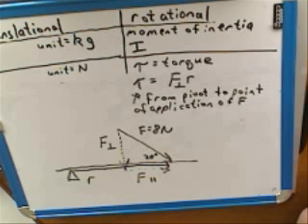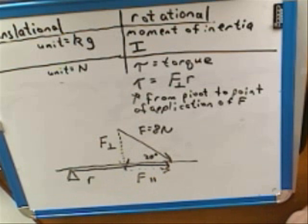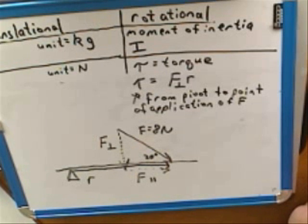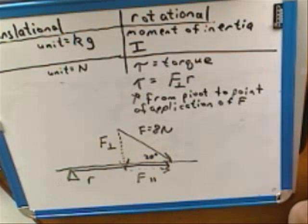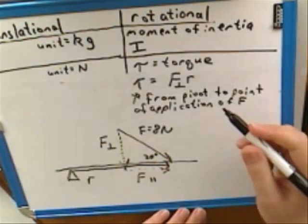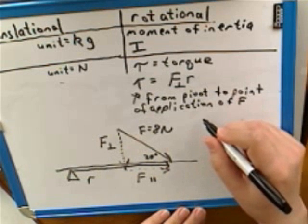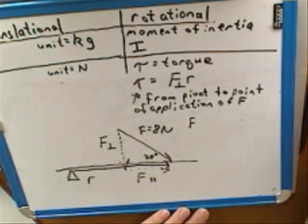Now we get a chance to exercise our trigonometry skills. How would we actually figure out how long F perpendicular is? Based on the information given, we should be able to figure out the magnitude of F perpendicular. So talk me through how you would do that. Well, you've got 20 degrees, so that would be opposite over hypotenuse, because you've got the force equals 8 Newtons on the diagonal arrow vector.